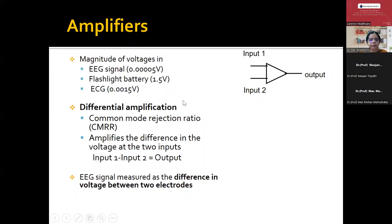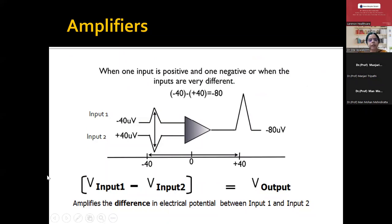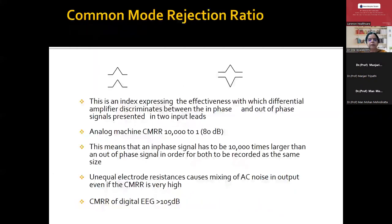The EEG amplifier will have two important features. The first one is the common mode rejection ratio. The EEG signal is measured as the difference in voltage between two electrodes — for example, input one minus input two becomes the output. If input one is minus 40 and input two is plus 40, then minus 40 minus 40 equals minus 80 — this is the deflection which is upwards. The details of localization will be discussed in another class.